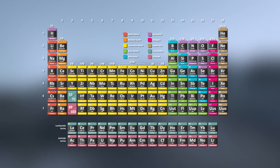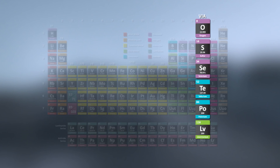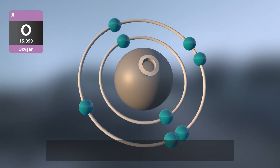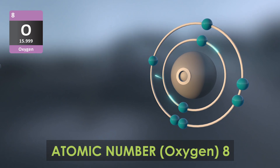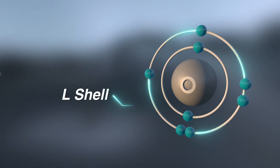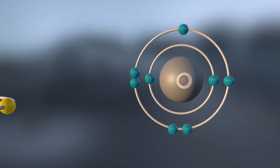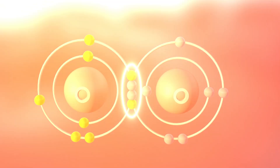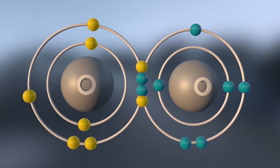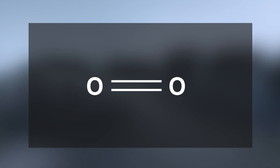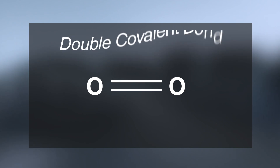Double covalent bond is formed between similar atoms of group 6A. Let us consider an example of oxygen molecule. The atomic number of oxygen is 8. It consists of two electrons in K shell and six electrons in L shell. Oxygen needs two electrons to complete its octet. When two atoms of oxygen react with each other, both the atoms share their two electrons and get stable.